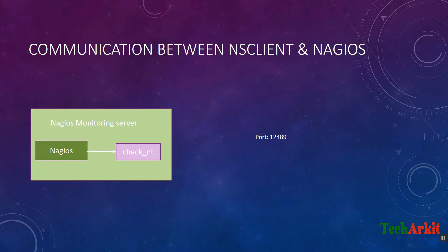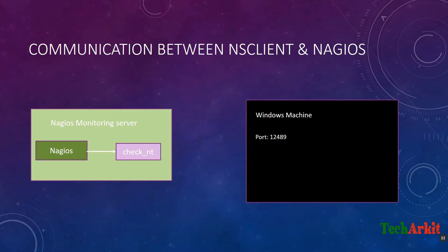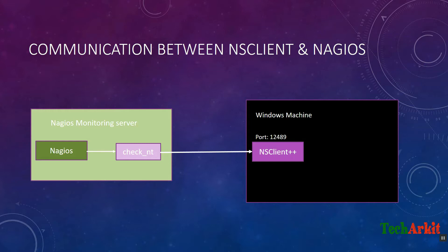You also have a remote Windows machine where you have installed NSClient++ which is listening on port 12489. What happens is that Nagios sends the check_nt request command — the check logic command — to the remote Windows machine to the NSClient on port 12489.